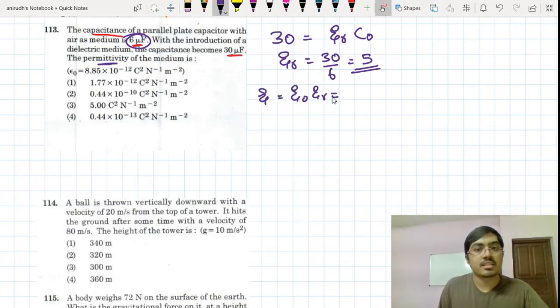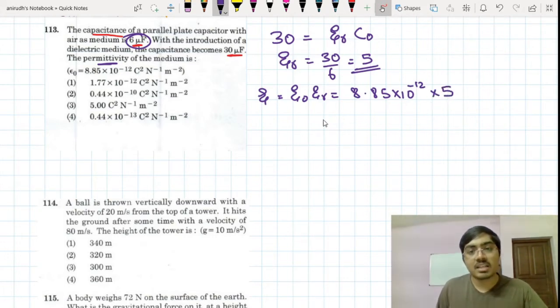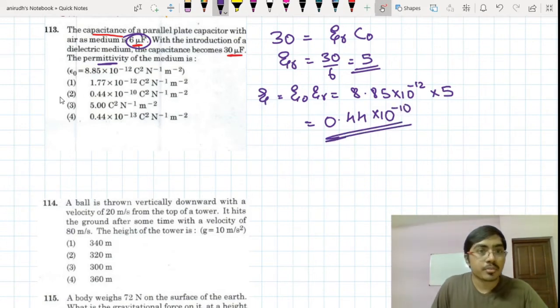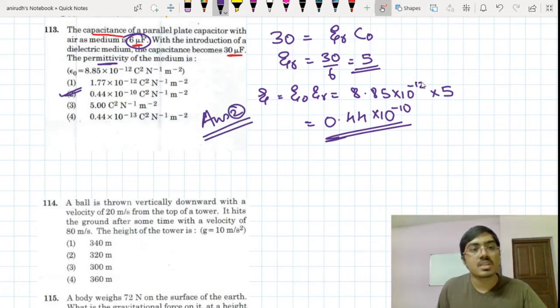Now permittivity is what they are asking. So that is epsilon is equal to epsilon naught times epsilon r. This is 8.85 multiplied by 10 to the power minus 12 multiplied by 5. So for that matter, my correct answer is 0.44 multiplied by 10 to the power minus 10. So the correct answer for this question is option number 2. Fairly easy question, but it demands the knowledge of this equation.